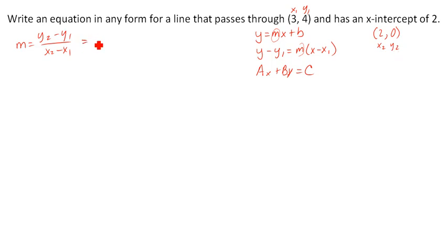And so now I can just go 0 minus 4 over 2 minus 3. Now, yes, you could have done that in the other order. You can make this your second point and this your first one, and that's fine. So that would give me negative 4 over negative 1, which would be negative 1. I'm going to go ahead and reduce that, which will give me a slope of 4.